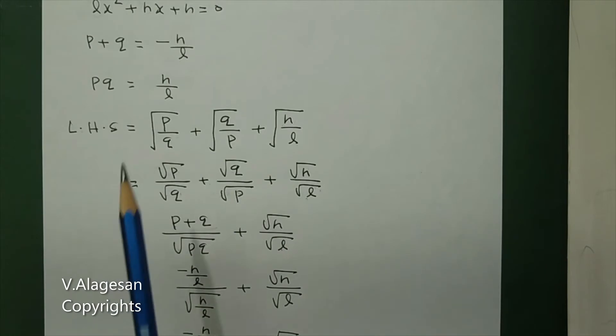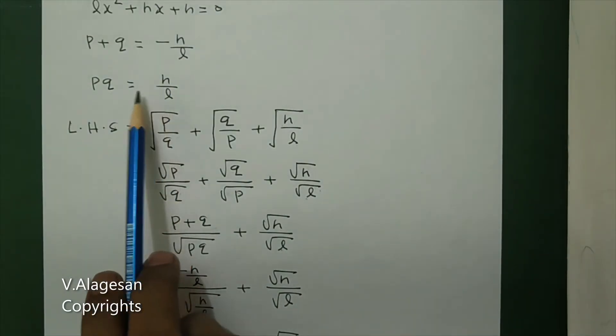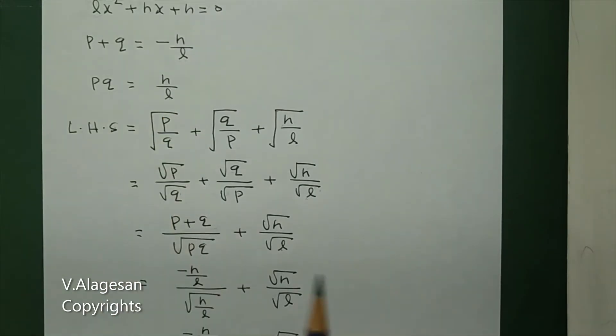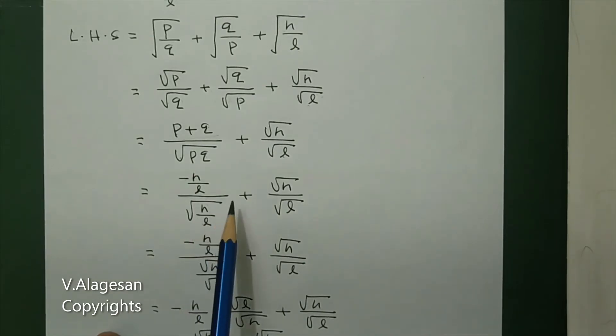Now substitute: p + q is -n/l and pq is n/l. So we have: (-n/l) / √(n/l) + √(n/l), which simplifies to (-n/l) / √(n/l) + √n/√l.